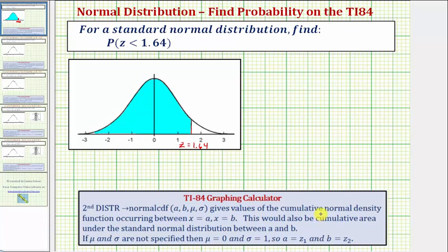...which gives values for the cumulative normal density function occurring between x equals a and x equals b. This value would also be the cumulative area under the standard normal distribution between a and b, which will give us our probability. And if mu is equal to zero and sigma is equal to one, the values of a and b would be lower and upper bound z-scores.